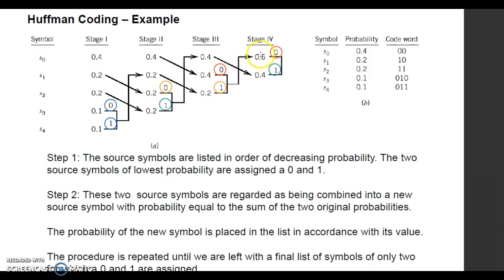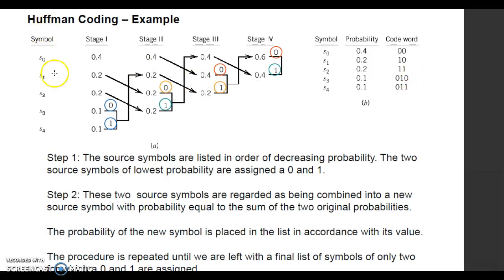In step number 4, column 6 and column 4 are present, so the addition equals 1 and we need to stop the procedure. Then you can write down the code word by tracing the bit assigned to the corresponding value of probability, and in the code word column you can write down the value of the code word.